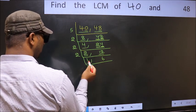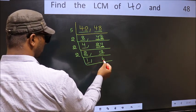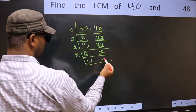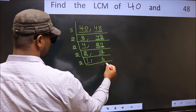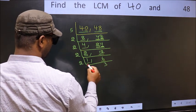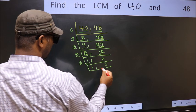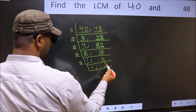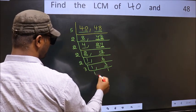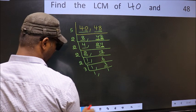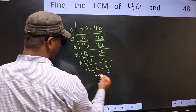Now we got 1 here, so focus onto the other number 6. 6 is 2 threes — 2 times 3 is 6. Now we have 3, and 3 is a prime number, so 3 ones are 3. So we got 1 in both places.